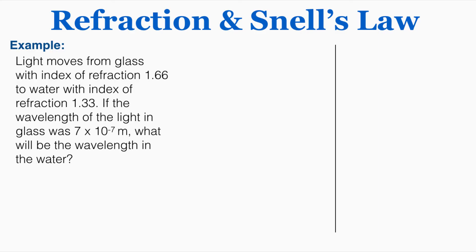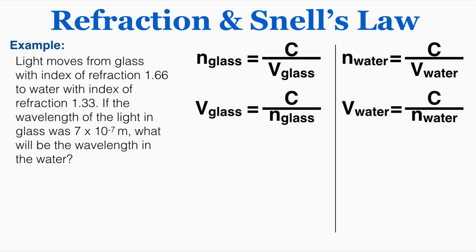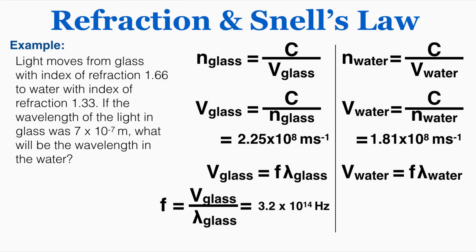So this is an example problem using that fact. Light moves from glass with an index of refraction of 1.66 to water with an index of refraction of 1.33. If the wavelength of the light in glass was 7 times 10 to the negative 7 meters, what will be the wavelength in the water? So I'm going to start by calculating the velocity of the wave in each material. This is what I get for each. And now I can take this velocity and combine it with the wavelength to find the frequency, and I know that the frequency is staying the same for both materials even though the wavelength and the velocity are different. So now I can take that frequency over to this other side to calculate the wavelength in the water, which I find to be 5.7 times 10 to the negative 7.